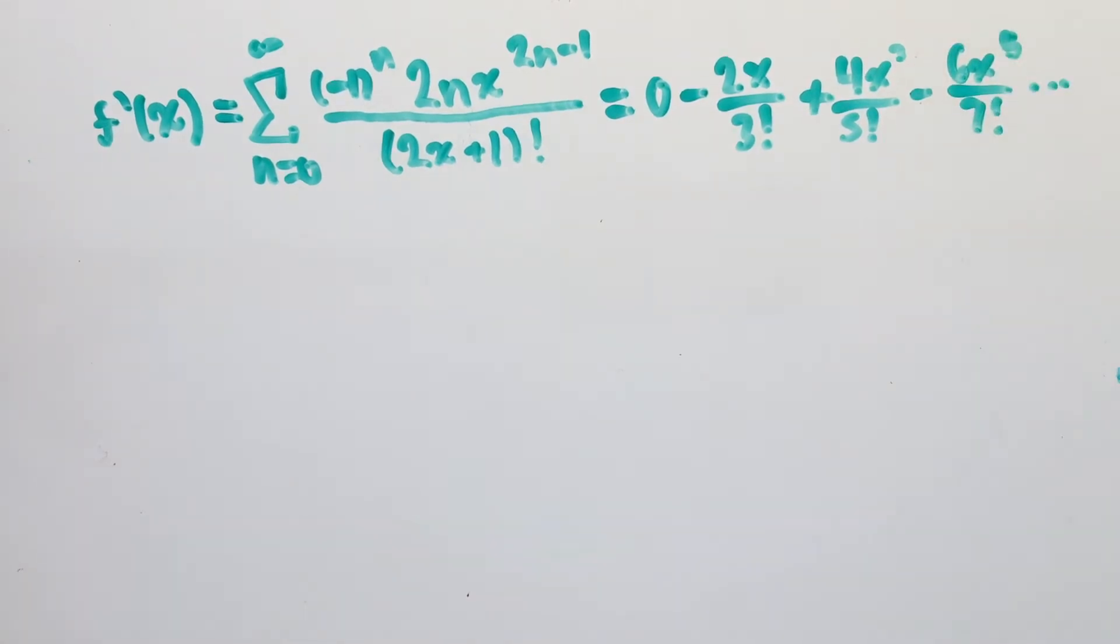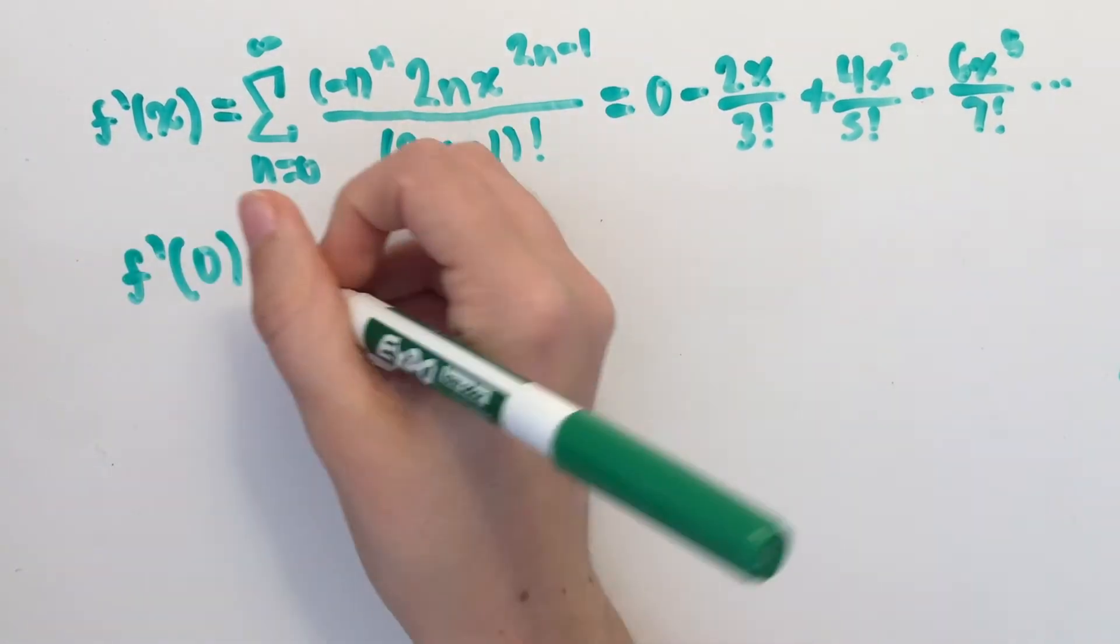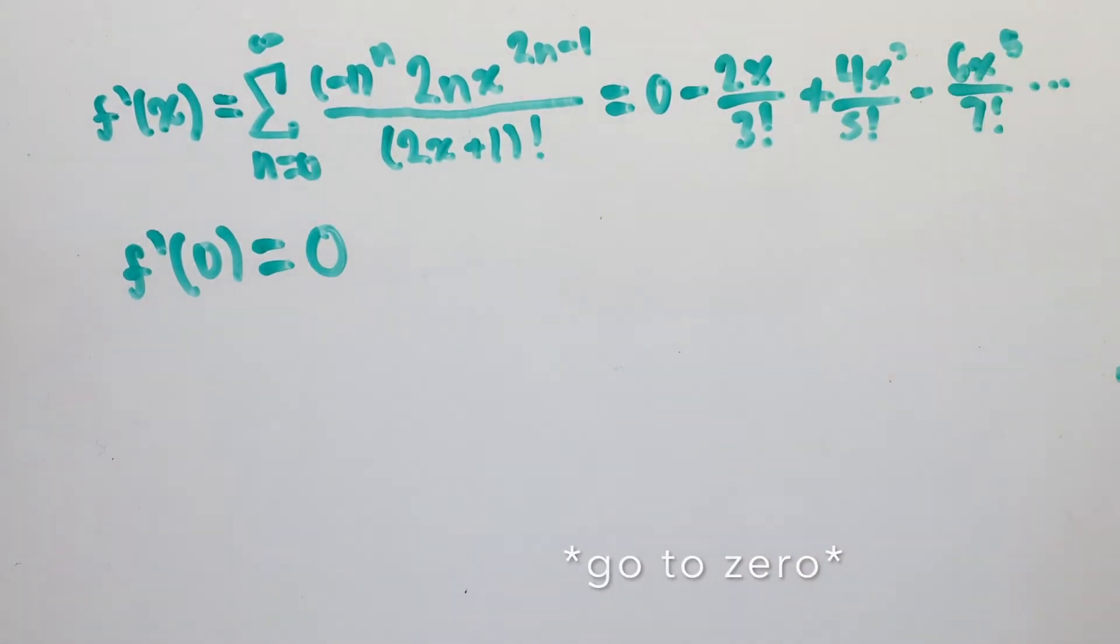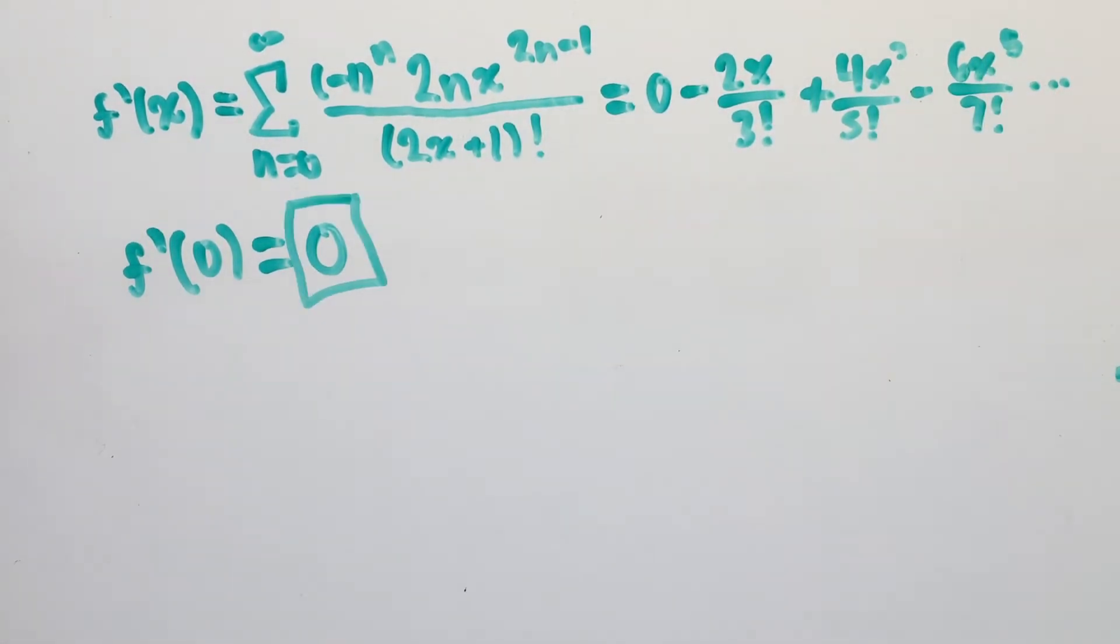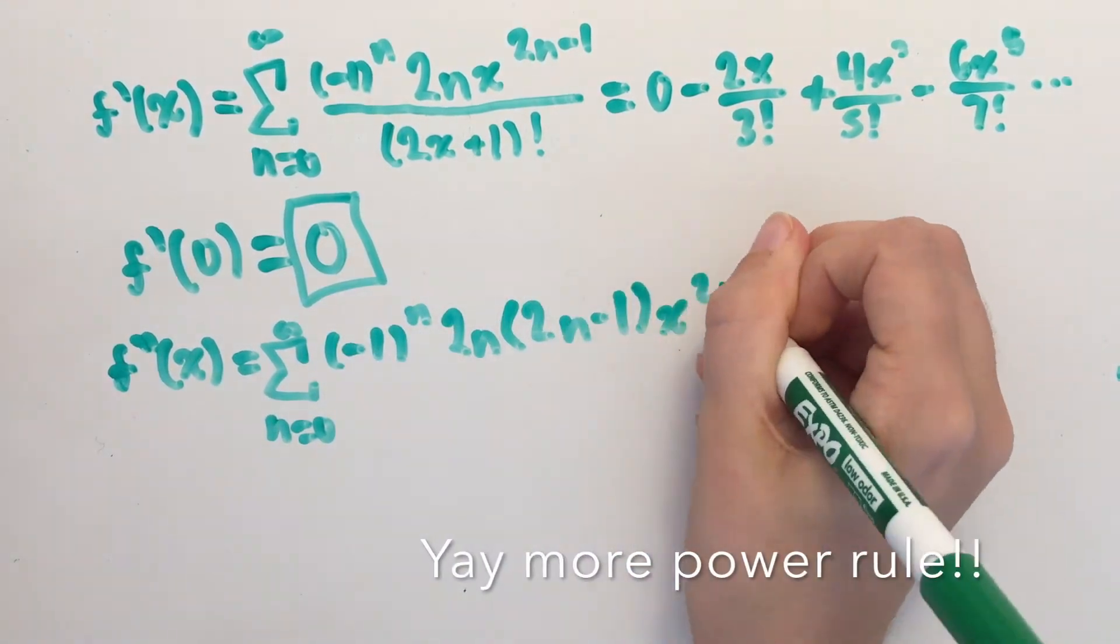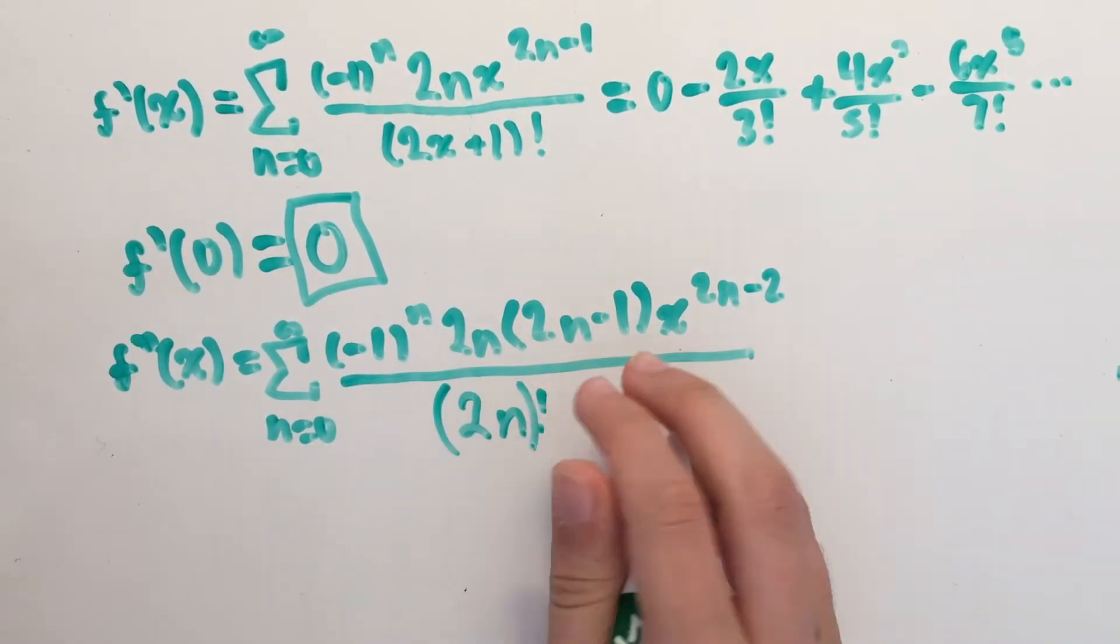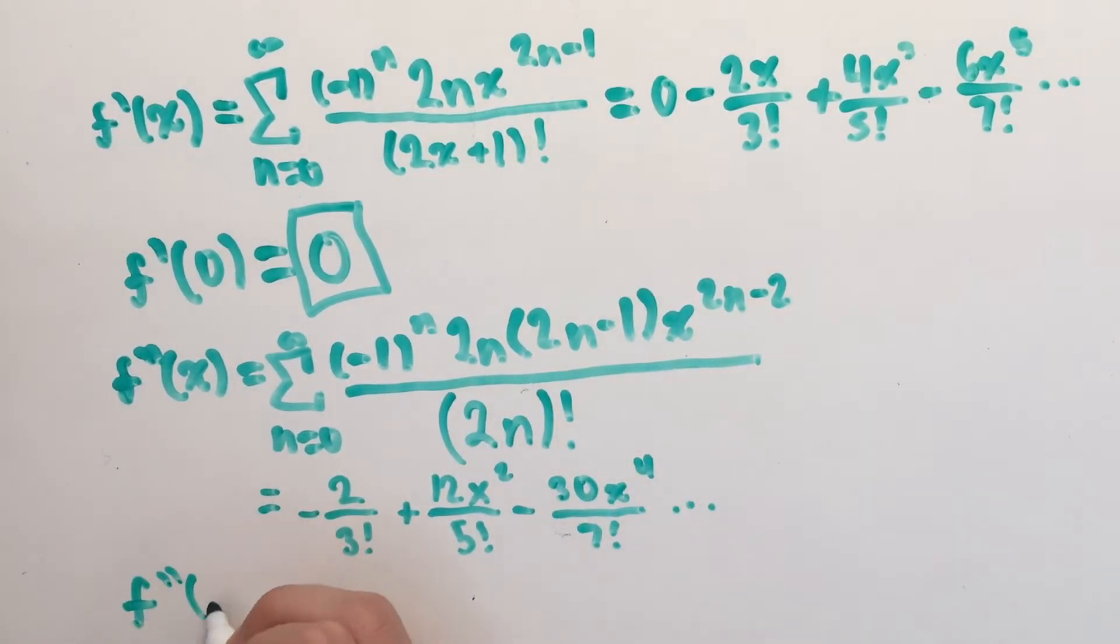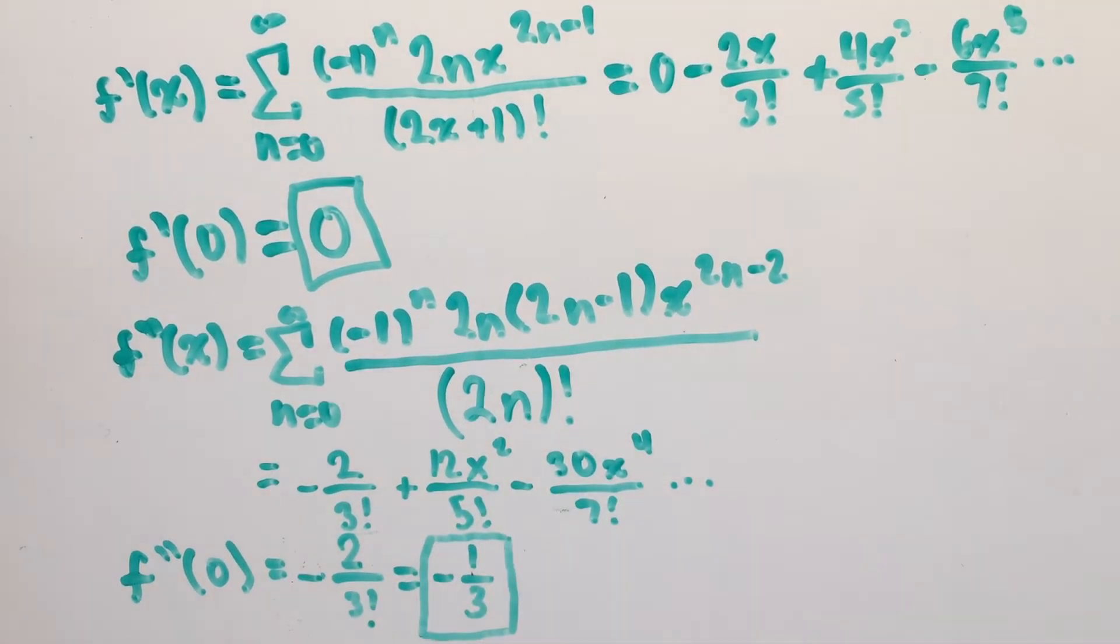I went out to about 4 terms so that I could determine the pattern. Then I plugged in 0 for x, and I got f prime of 0 is equal to 0, because all of these terms with x cancel. To find f prime prime of 0, or the second derivative at x equals 0, I did the same thing. I got my final answer that the second derivative at x equals 0 is equal to negative 1 third.